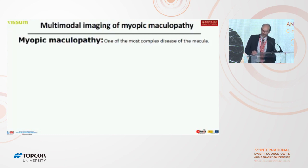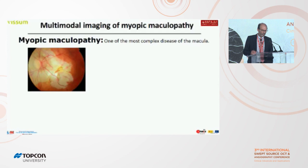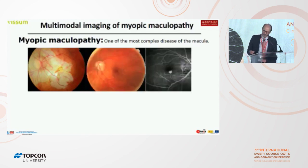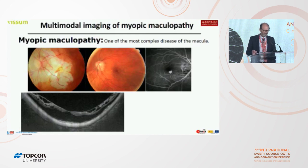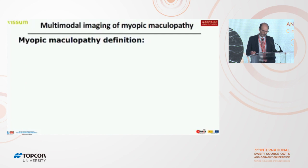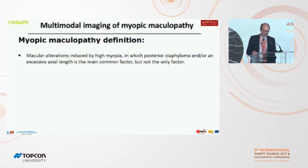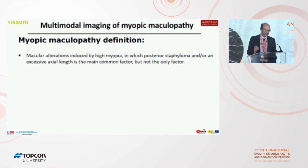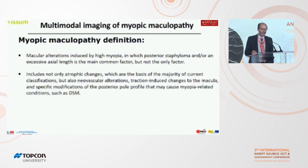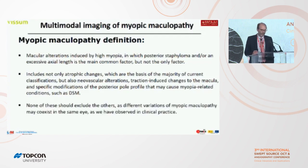Myopic maculopathy is one of the most complex diseases of the macula due to its components of atrophy, neovascularization, MRI, macular traction maculopathy, and some changes in the normal profile of the retina. We can define myopic maculopathy as a macular alteration induced by high myopia in which posterior staphyloma and/or excessive axial length is the main common factor but not the only factor. It includes not only atrophic changes, which are the basis of the majority of current classifications, but also neovascular lesions, traction-inducing changes of the macula, and a specific modification of the profile similar to the dome-shaped macula. None of these should exclude the others, as different variations of myopic maculopathy may coexist in the same eye, as we have observed in clinical practice.